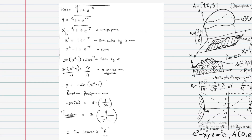To find the inverse, swap x and y. So x equals the cube root of 1 plus e to the power of minus y. Now solve for y.